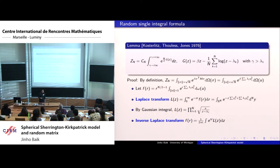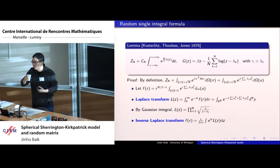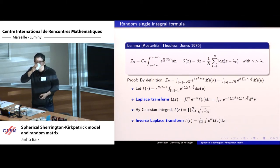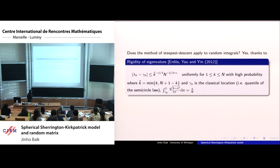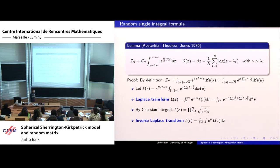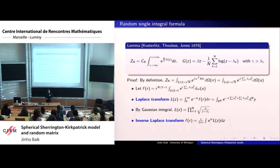Now we have a single integral, and we want to take the large-n limit using the method of steepest descent. The slight difference is that the integral is random. However, thanks to the rigidity of eigenvalues — the lambda_k's fluctuate around their classical locations in a controlled way — we can still apply the steepest descent method with controlled error.